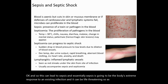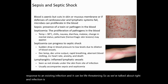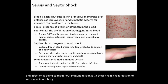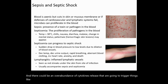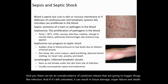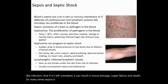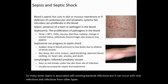As we've talked about, an infection is going to trigger our immune response — a chain reaction of responses in our body. Sometimes things don't always go according to plan, and there will be an overabundance of cytokines released that are going to trigger inflammation. If left untreated, it can result in tissue damage, organ failure, and death. Sepsis is many times associated with existing bacterial infections, but it can occur with viral infections and infections from other types of pathogens as well.